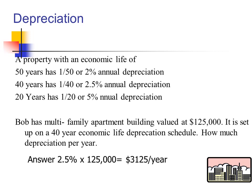Bob has a multi-family apartment building valued at $125,000, set up on a 40-year economic life depreciation schedule. How much depreciation per year? If we have the percentage of 2.5% of the $125,000 building, based on a 40-year economic life, that means every year that building depreciates $3,125 — which is your annual depreciation off your net operating income before taxes.